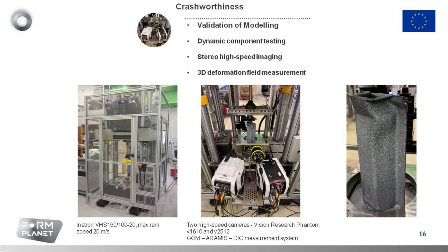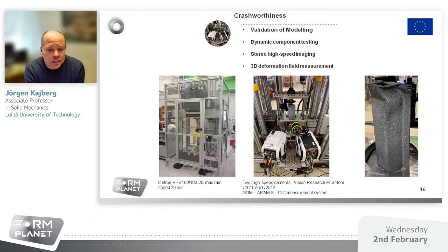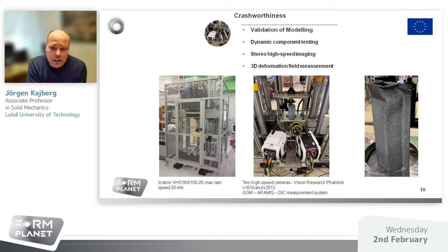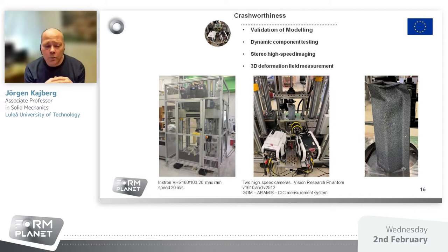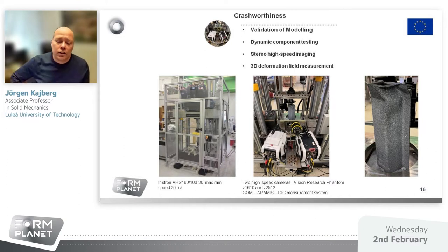Moving to the validation part, at LTU we have a high-speed tensile testing machine used for all high-speed tensile tests, for EWF tests at high strain rate, and also in compression, for example of crash boxes. We're performing dynamic component testing. You can see to the right a crash box prepared with speckles — if you add two high-speed cameras and use the DIC software, you will be able to detect cracks when they appear and also measure the plastic strains as they evolve during the compression.